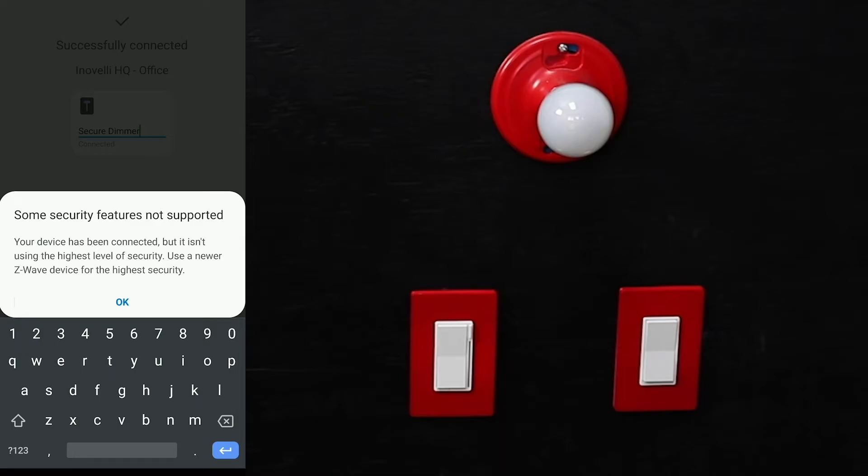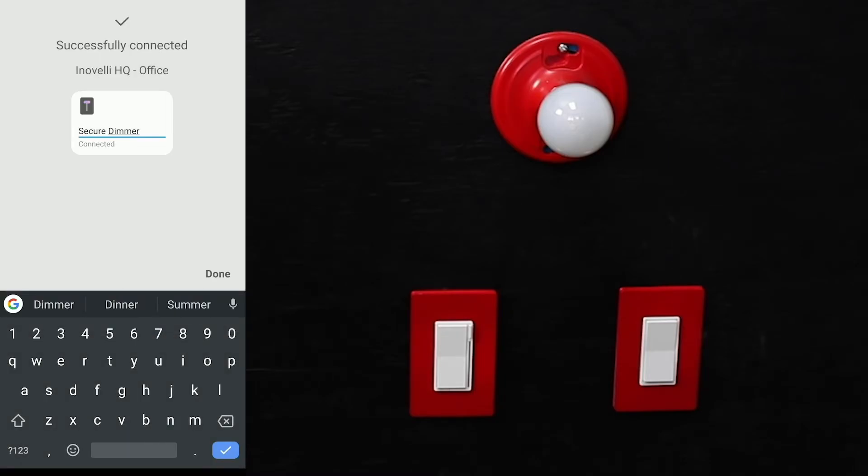Go ahead and ignore this security feature is not supported message. We do have the latest in Z-Wave encryption, so I'm honestly not sure what this means, but go ahead and exit it. This will show up without a device handler. If you did not install the device handler, this will show up as a Secure Dimmer.